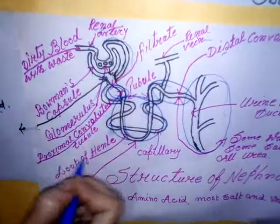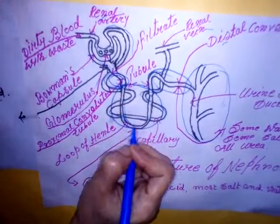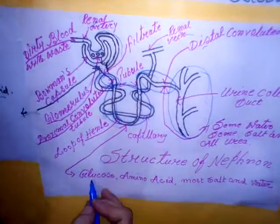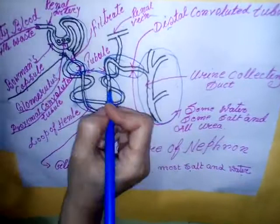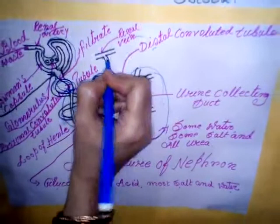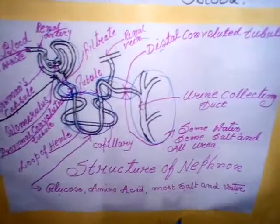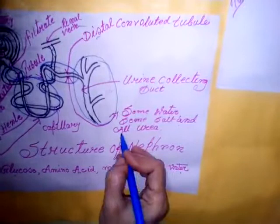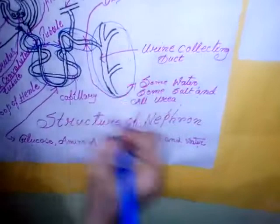When the filtrate passes through the tubule, useful substances such as glucose, amino acids, most of the water and salt are reabsorbed by the capillaries and sent back to our blood via the renal vein. The leftover substances — some water, some salt, and all the urea — remain behind in the tubule and together form urine. This urine ultimately enters the urine collecting duct.